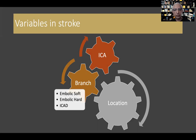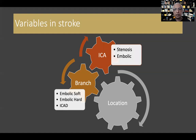A branch occlusion could be an embolic occlusion which is soft like an RBC clot, or relatively harder in a fibrin-rich clot, or it could be ICAD — intracerebral atherosclerotic disease — where there's a narrowing secondary to a plaque that has acutely occluded either because of thrombosis or a ruptured plaque. When it comes to the internal carotid artery, it can be a stenosis or a large embolus like one coming from an LV clot latching at the ICA bifurcation.